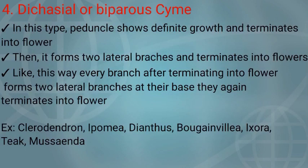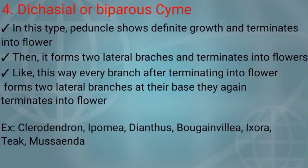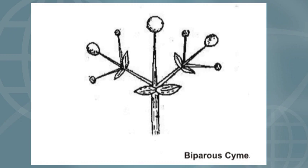Dichasial or Biparous cyme: in this type, the peduncle shows definite growth and terminates into a flower. Then it forms two lateral branches which also terminate into flowers. In this way, every time they form two branches at their base which also terminate into flowers. It is a continuous process. Example: Clerodendron. In the diagram, the middle peduncle terminates into a flower and forms two branches; those also terminate into flowers, then form two more branches at their base continuously.